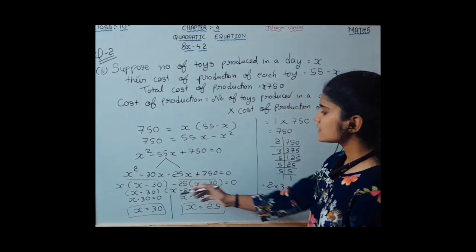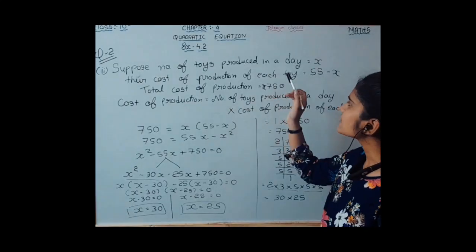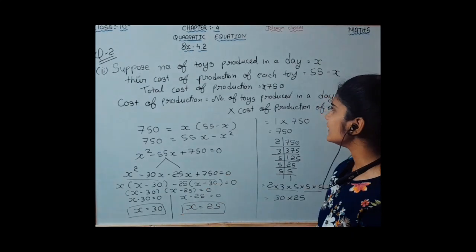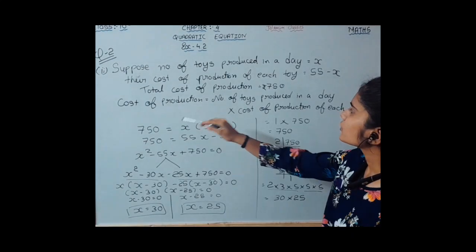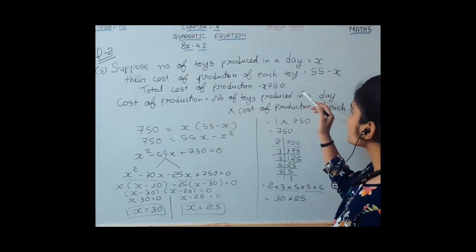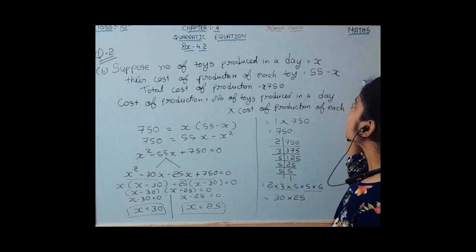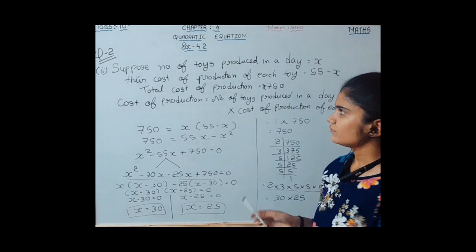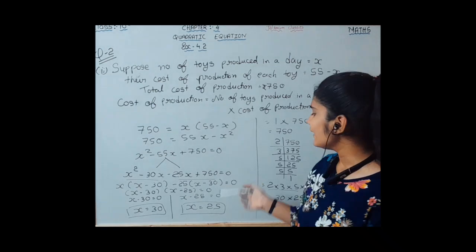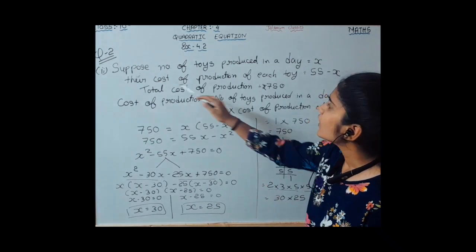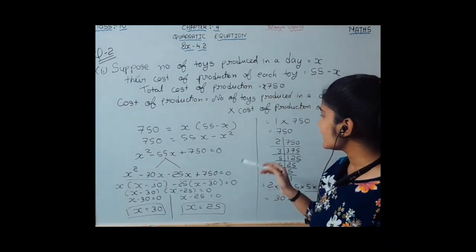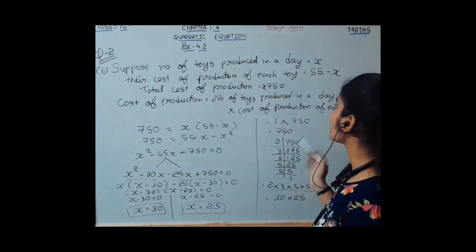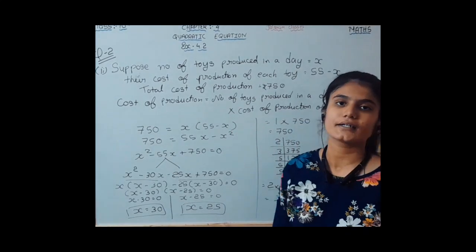If the number of toys produced in a day is 30, then the cost of production of each toy is 25 rupees. And if the number of toys produced is 25, then the cost of production of each toy is 30 rupees.